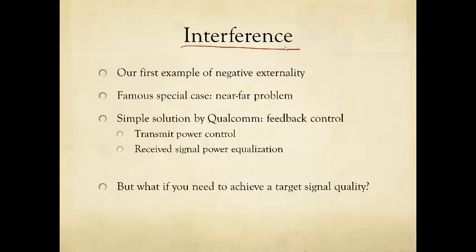Interference in the air for cellular network is the first example in this course of something called negative externality. Externality here, roughly speaking, refers to the fact that your happiness also depends on what other people do. Your signal, your cup of tea or coffee, is other transmissions poison. And this is what we call a negative externality.